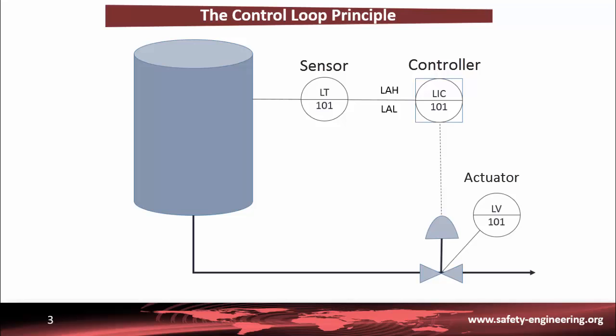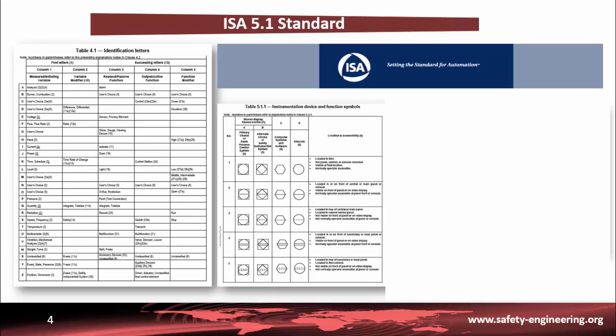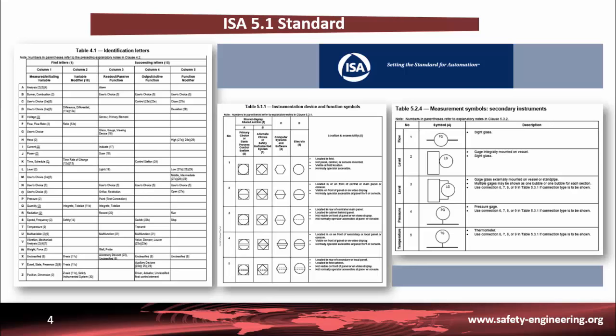In the next slide we will explain the different symbols and tagging conventions associated with these instruments. The tag number convention is established by the ISA 5.1 standard, which stands for Instrumentation System and Automation Society. This standard establishes a universal means of depicting and identifying instruments or devices and their inherent functions, by presenting a designation system that includes identification diagrams and graphic symbols.